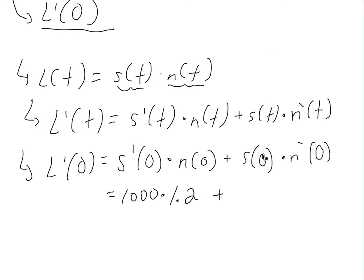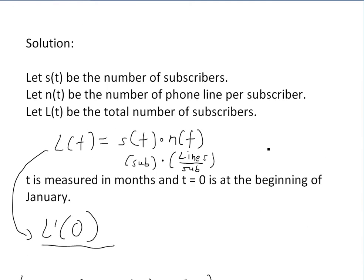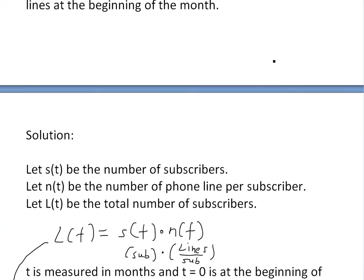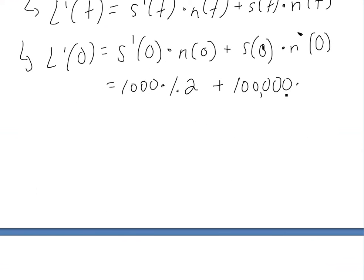And then plus, this one is S(0), how many total subscribers at the beginning of the month. That's 100,000. And now times, this is the rate of change or the derivative of the number of lines per subscriber. That's from the poll, and they found that each intended to install an average of 0.01 new phone lines. So they're thinking about increasing that much more. So we just times it by 0.01.